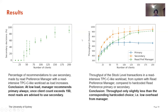The right-hand figure shows the throughput of stock-level transactions in this read-intensive workload. We compare three things: the blue solid line shows when read preference is hard-coded as primary copy; the orange dashed line shows when read preference is hard-coded as secondary copy; and the green dashed line shows when the Read Preference Manager is activated. We can see that throughput is only slightly less than the corresponding hard-coded choice, meaning the manager has very low overhead.